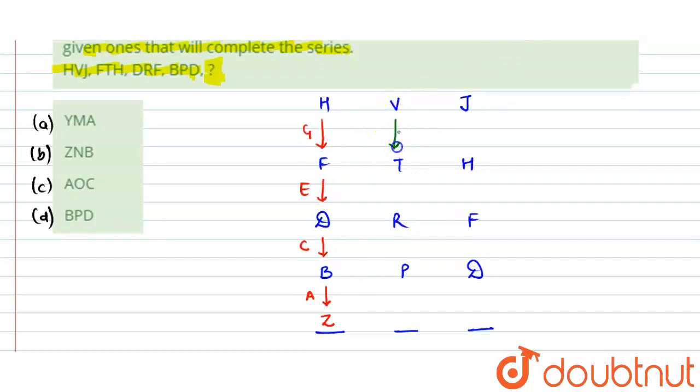Next we have, again here we have alternate letters, so V, U, T, T, S, R, then we have R, Q, P, then we have P, O, N. Okay?